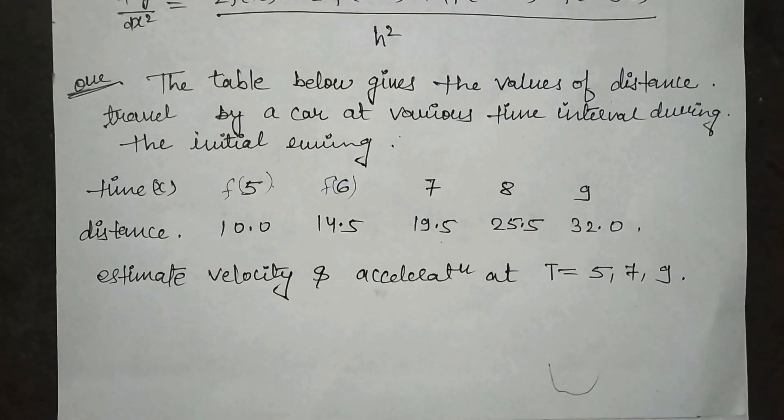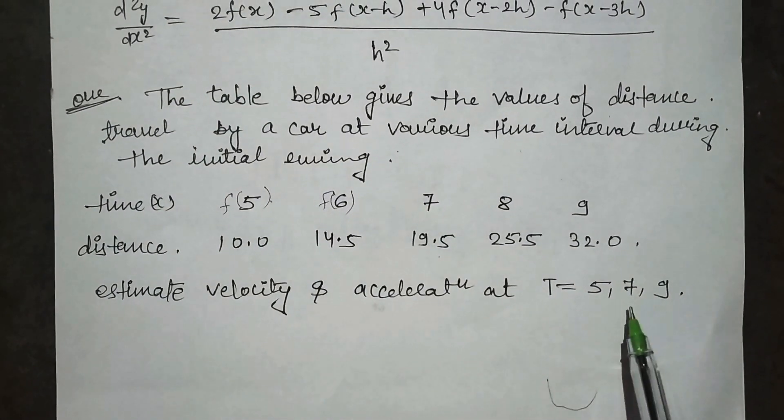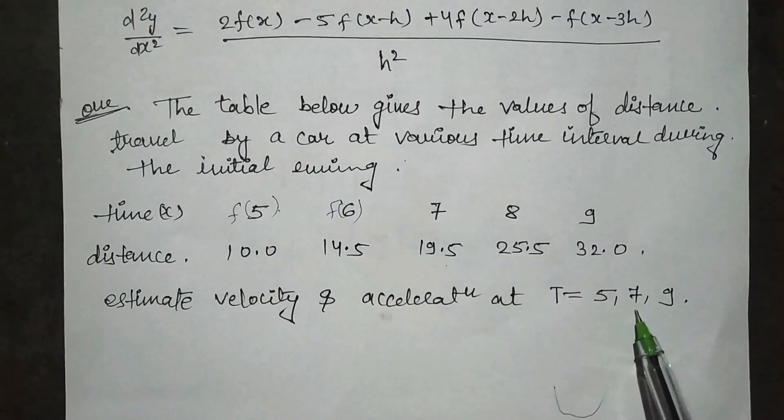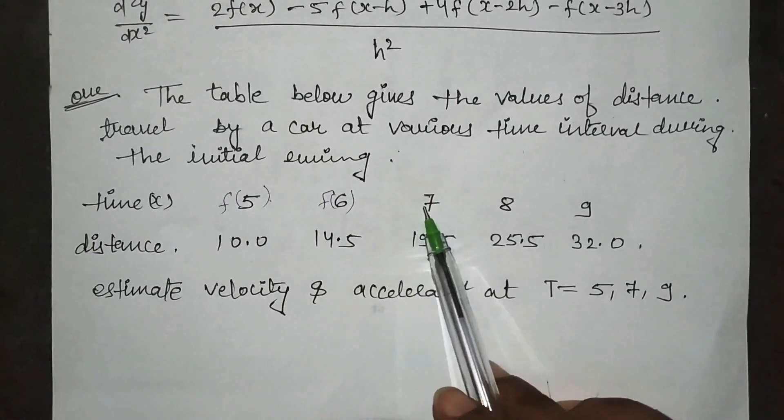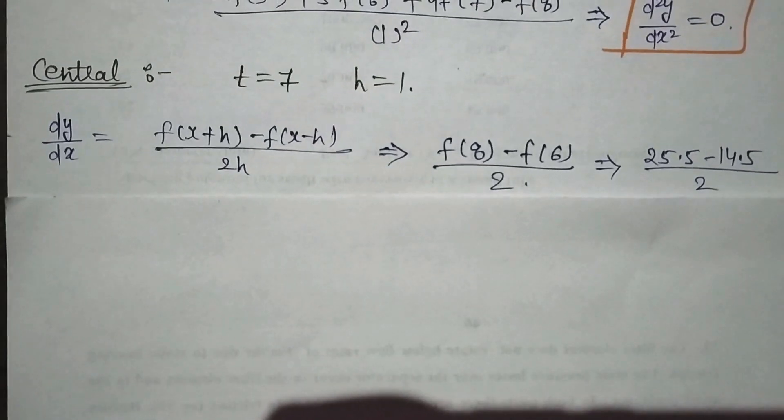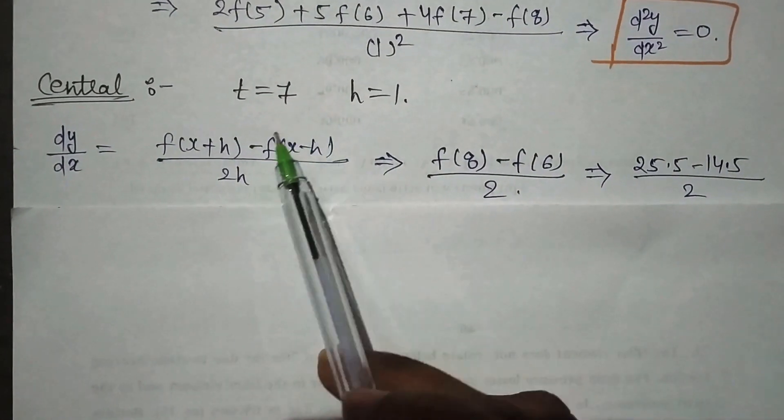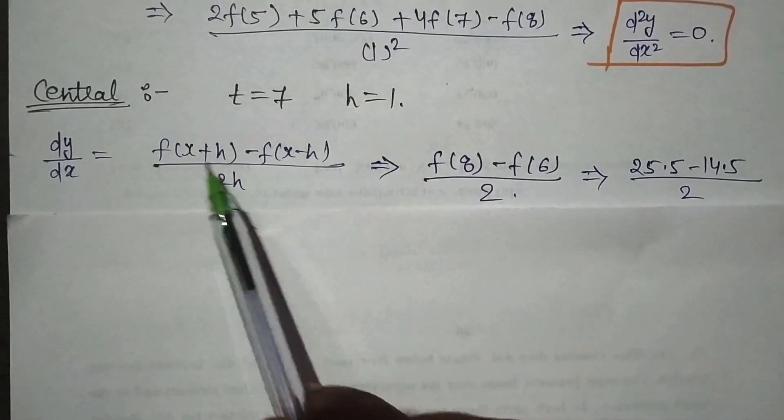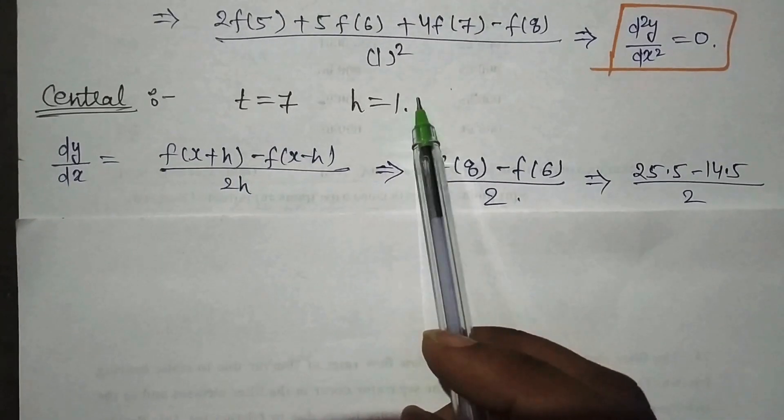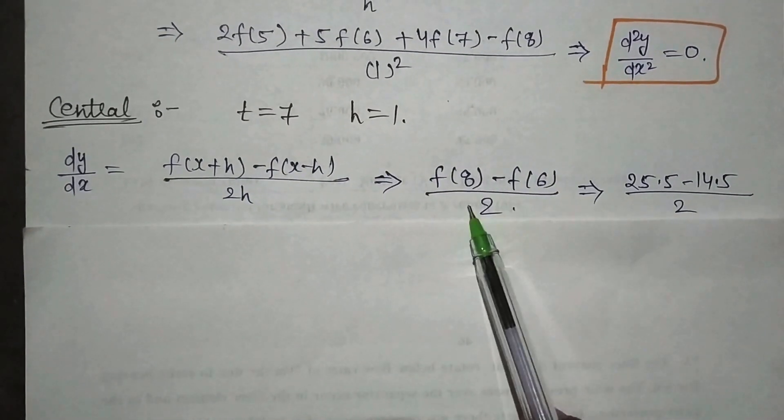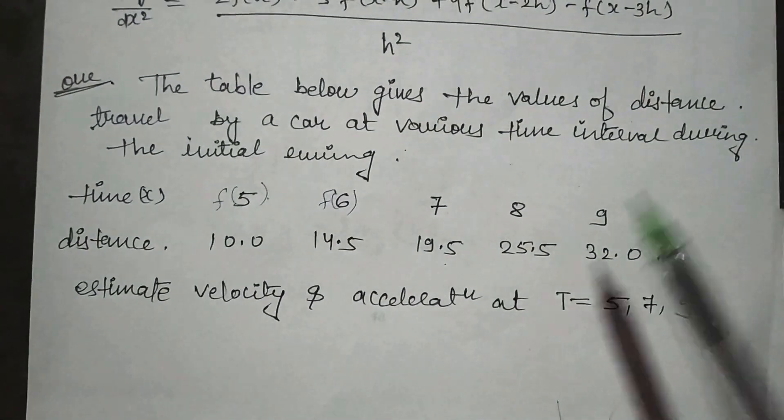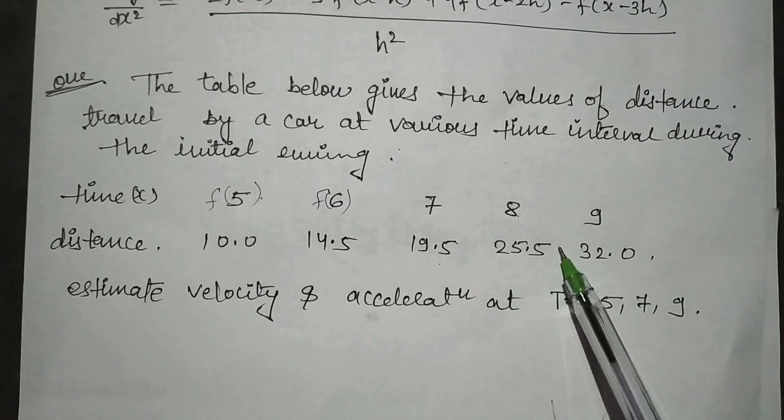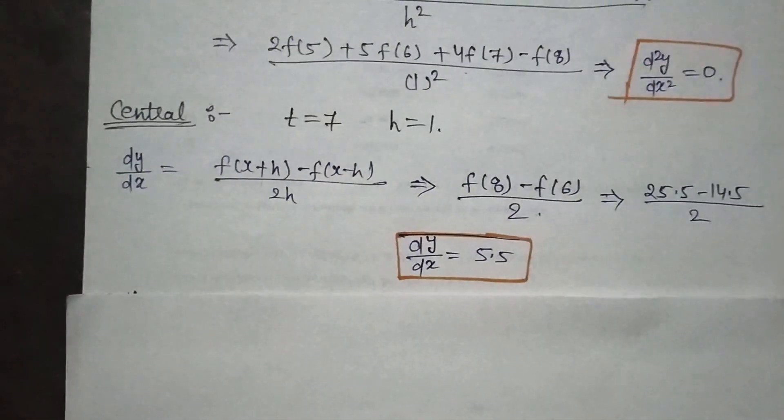Now we have to solve for central. See in your question paper. What is the value of central? X is 7. See, 7 is at the center. That's why we will solve using central. This is the value of X. T is 7, that is your X is 7, and H is 1. Now you put in place of x put 7, and in place of H put 1. You know the value of f8 and f6 we have to take from our question. So this is f8 value 25.5 and f6 value is 14.5. We have picked from here and put here, and solved it. And you will get the answer. This is your answer for the central.